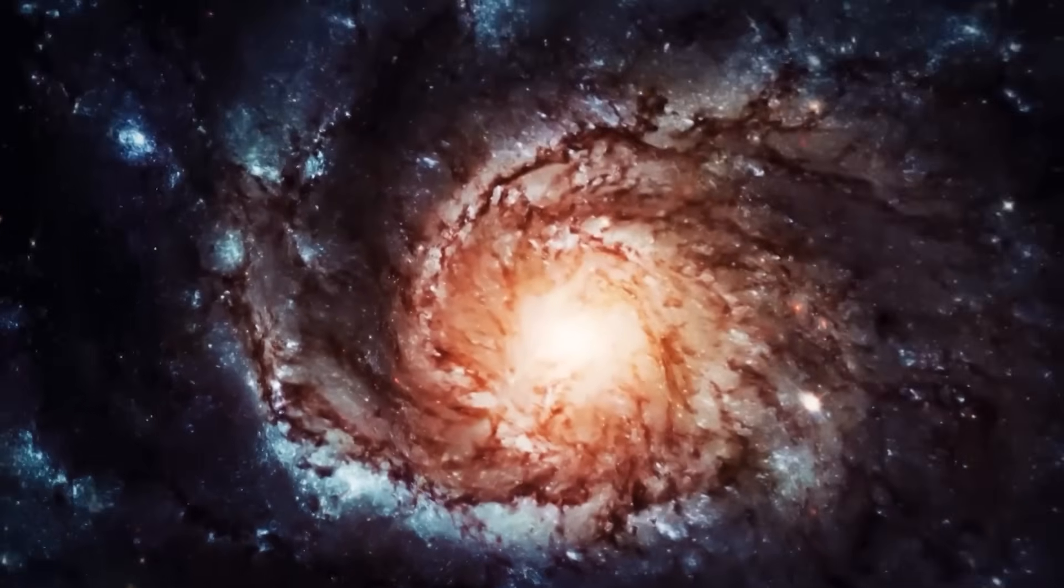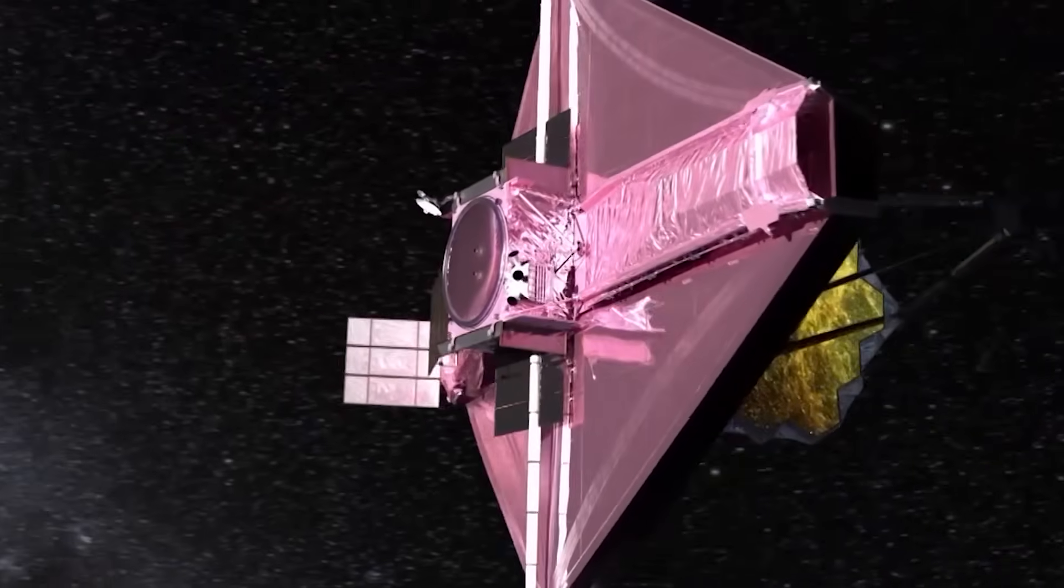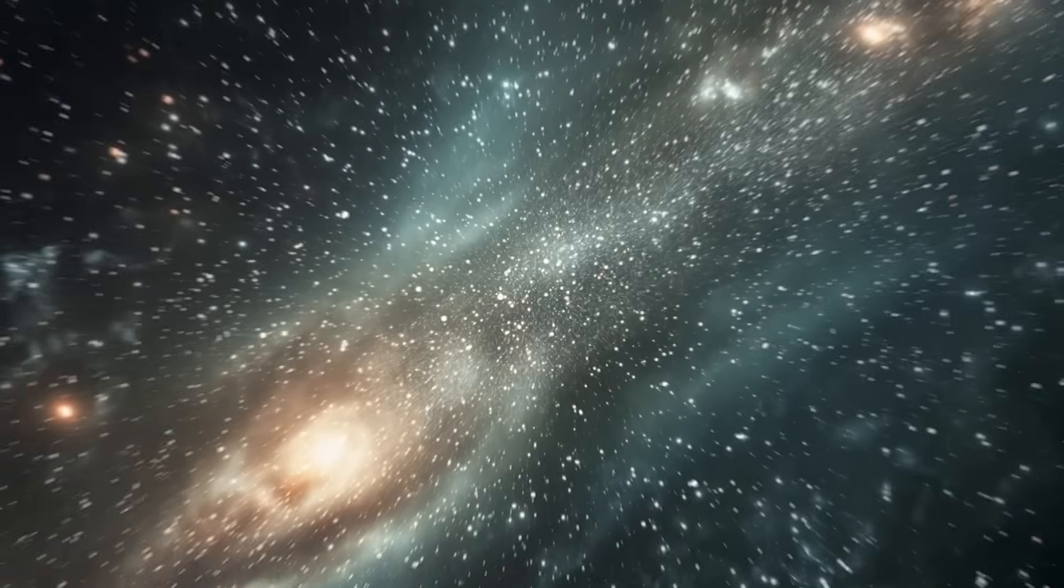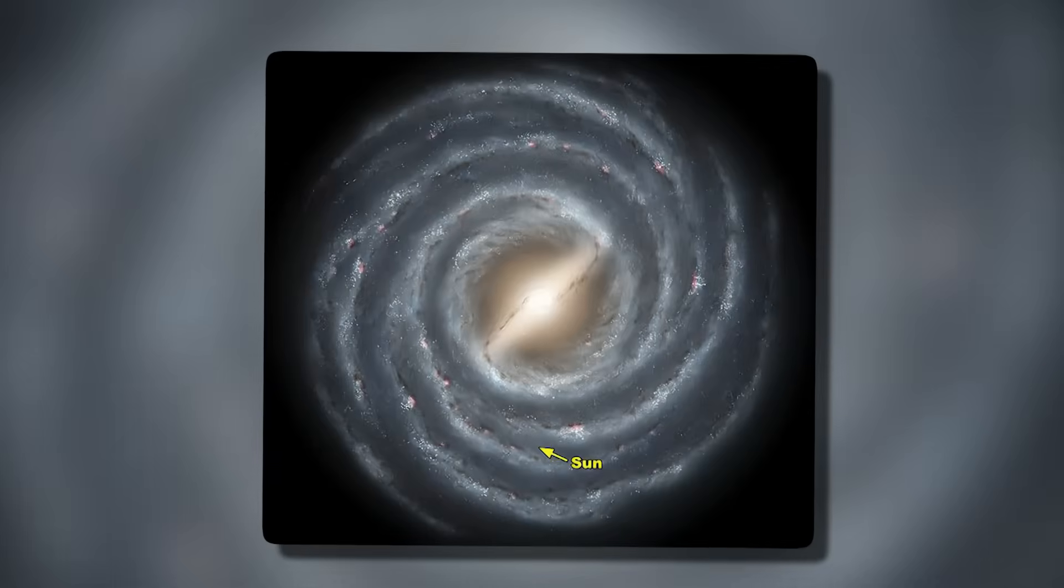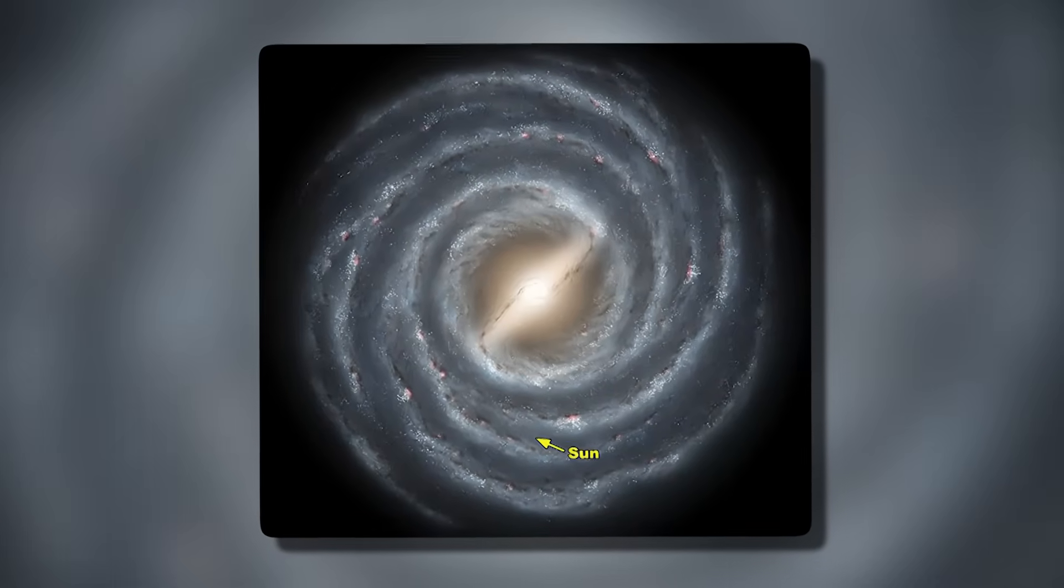The horrifying part wasn't merely its presence, it was the implications. This ancient galaxy cluster was not alone. Webb detected several similar objects, some even more distant, appearing fully formed in the cosmic dawn. The sheer number and maturity of these galaxies upended the prevailing model of the universe's timeline.